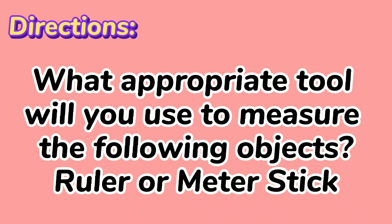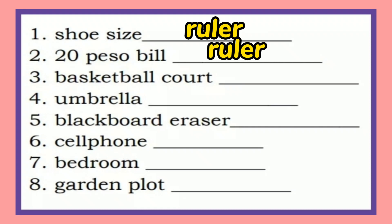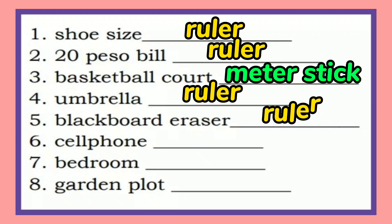Let's have an activity. What appropriate tool will you use to measure the following objects — ruler or meter stick? For a shoebox, we will use a ruler. For a 20 peso bill, we will use a ruler. For a basketball court, we will use a meter stick. For an umbrella, we will use a ruler. For a blackboard eraser, we will use a ruler.